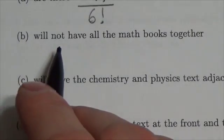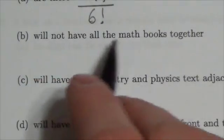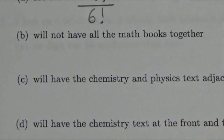how many ways can we do it if not all of the math books are together? So some of them can be together, but not all of them are together.